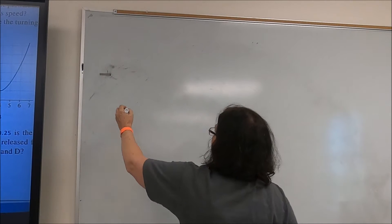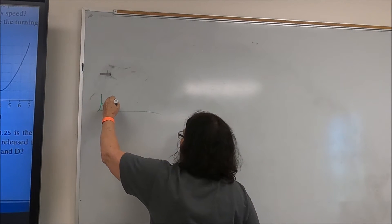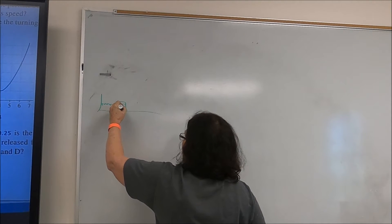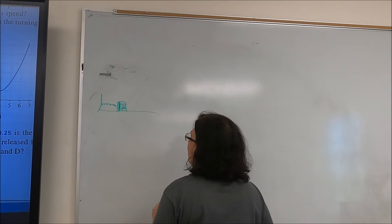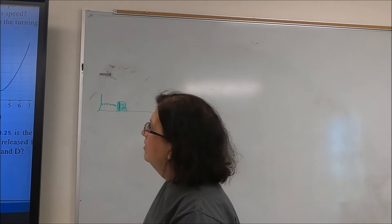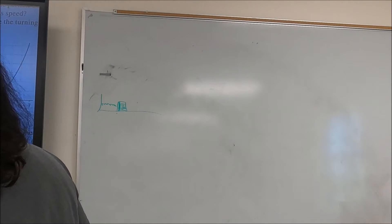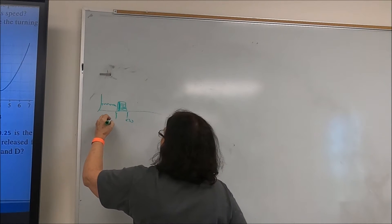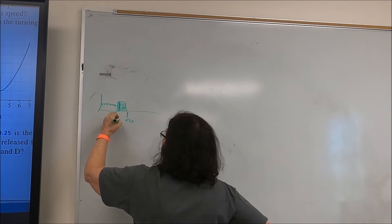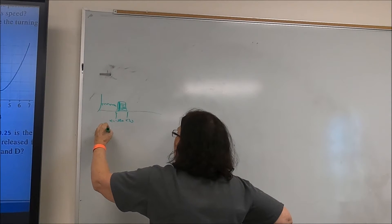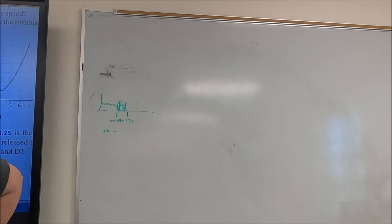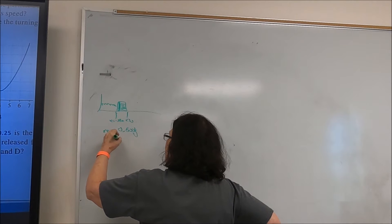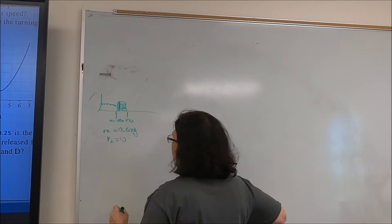Before release, I have a compressed spring with the book against it. The spring is compressed to x = −0.04 meters. The mass of the book is 0.500 kilograms and the initial velocity is zero.